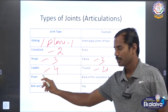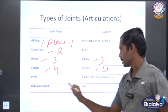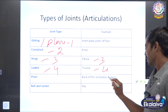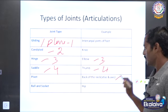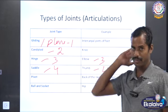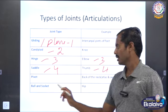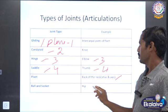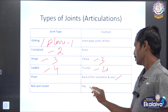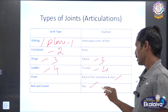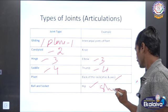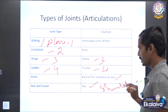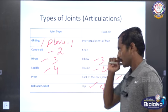Pivot joint — the back of the neck. Ball and socket — hip joint and shoulder.